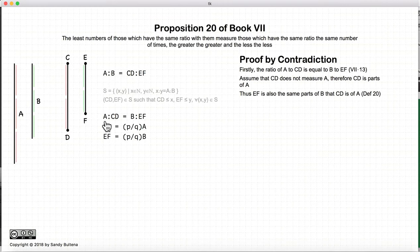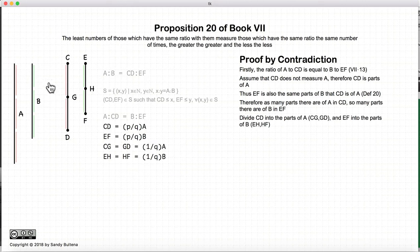And because the ratio of A to CD is equal to the ratio of B to EF, then according to the definition of Proportional, then CD, if it's some parts of A, then EF would be the same parts of B. So let's divide CD in as many parts as it is of A, and EF into as many parts as it is in B. And we have that CG equals GD and EH equals HF.